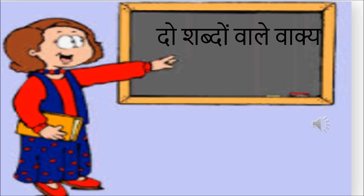So today we are going to do do shabdo wale vakya — till now we have been doing how to form a word with two syllables. Now today we will be doing how to form a sentence with these two letter words. A few things to remember when writing a sentence: first, give one finger space between two words. Second, after we finish the sentence, we give a purna viram. Can you see the standing line? The standing line is the purna viram.